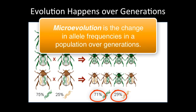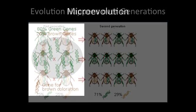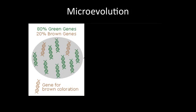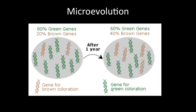Microevolution is a change in the allele frequencies in a population over generations. Natural selection can only act on a variation that has a genetic component. This genetic variation must be present before the selective pressure acts on the population.